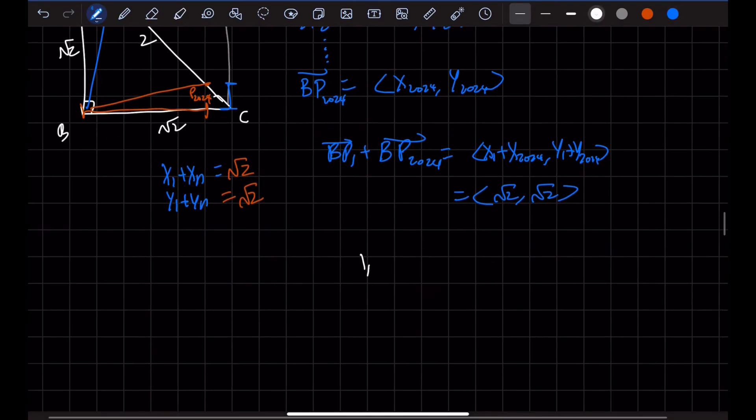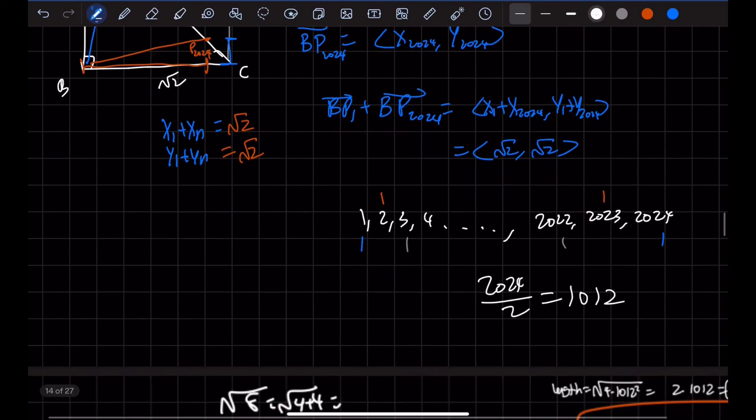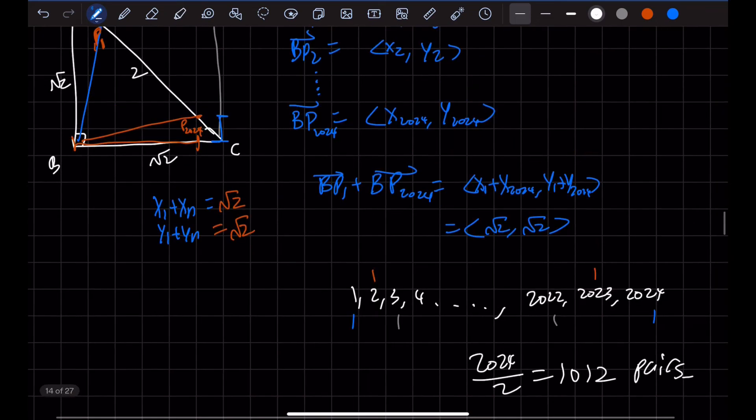So how many of these pairs do we have? We have 1, 2, 3, 4, dot, dot, dot, 2022, 2023, 2024. We know 1 and 2024 are a pair, 2 and 2023 are a pair, 3 and then 2022 are a pair. So there will be 2024 divided by 2, which is 1,012 pairs.